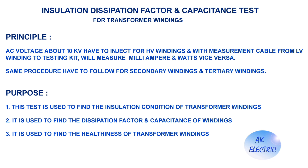First we'll see the principle of the test. AC voltage of about 10 kV is injected for HV windings, and with a measurement cable from LV winding to the testing kit, we measure milliampere and watts. The same procedure is followed for secondary windings and tertiary windings.